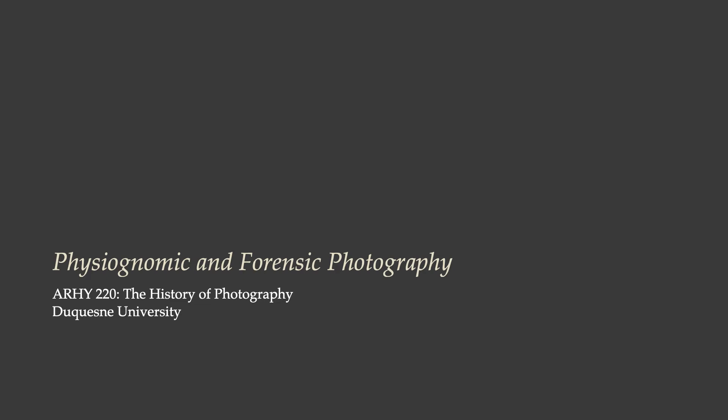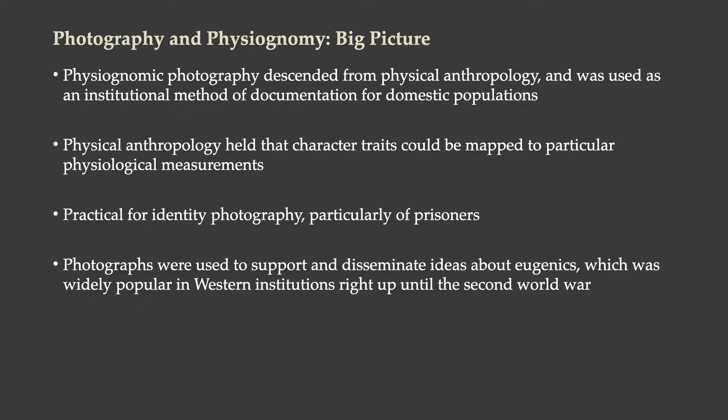Let's look at some examples of photography for the purposes of forensics and physiognomy in the late 19th century. When we're talking about photography and physiognomy in this period, we're talking about a use of photography descended from physical anthropology, used as an institutional method of documentation for domestic populations. The French are using it for French people, the British for British people, Americans for Americans, and so on.